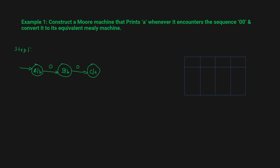Now what happens if you get input 1 in state A? For example, the sequence is 1, 0, 0 — it should still be able to print 'A' after this sequence. In the rest of the places the output should be 'b'.